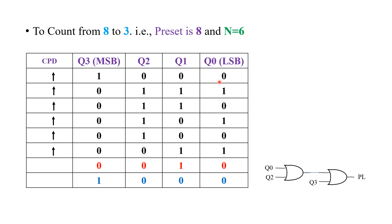Now, this is the truth table, and in this truth table I am going to take you through how to design the feedback which will be connected to the PL. Let us make a clear understanding of how the feedback is being designed. The value being started is 8. As it reaches to 3 as a part of the down count operation, after 3, by default, it will move to the value 2. But we don't want this value 2 to be displayed on the trainer kit.